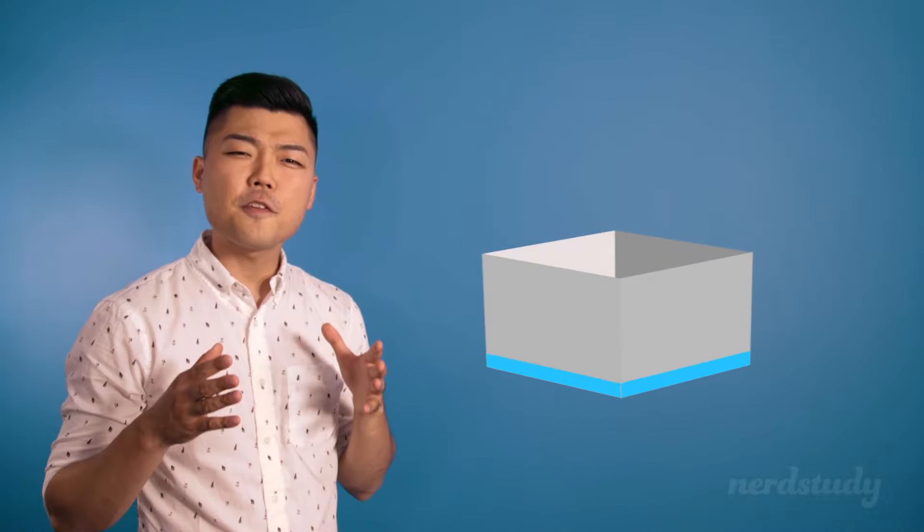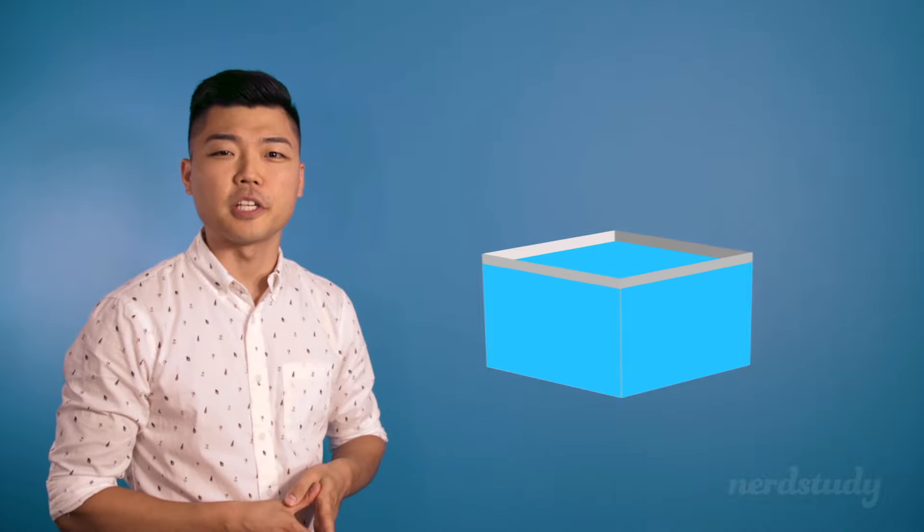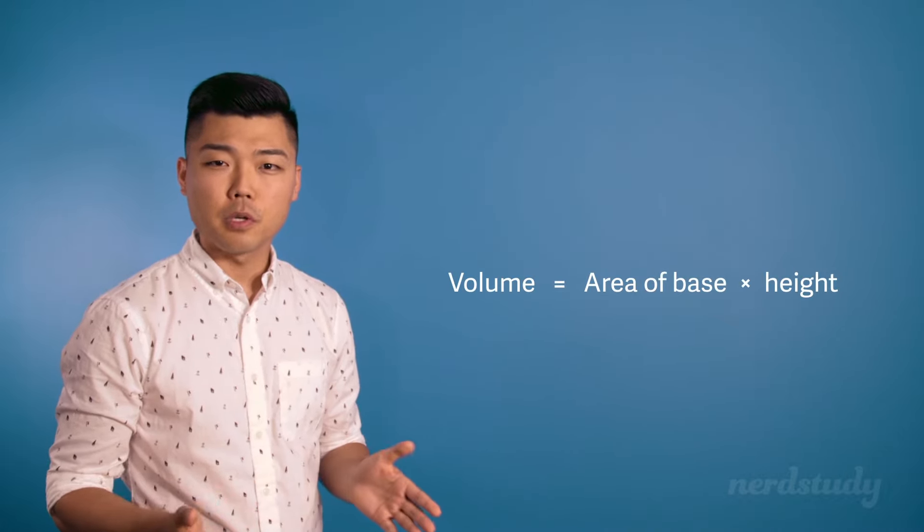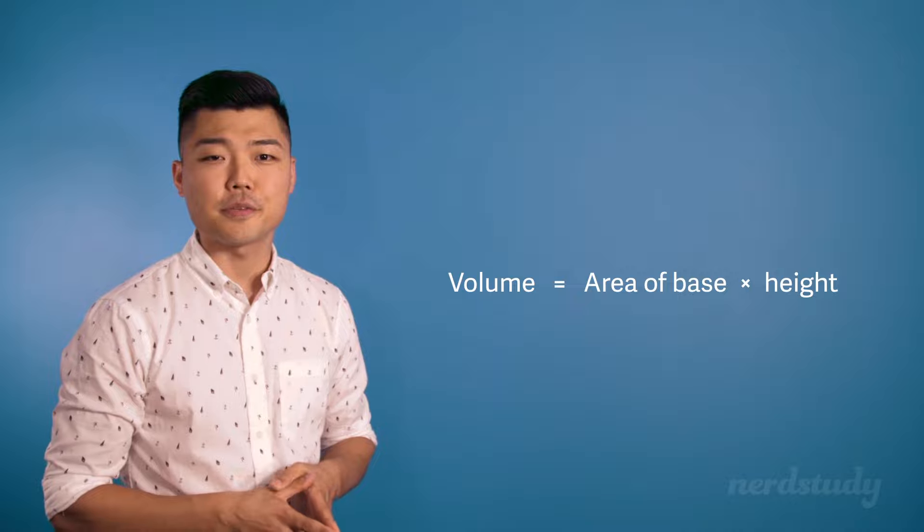Now let's take a look at how to find the volume of a prism. Remember that when we're looking for the volume, we're looking for the amount that can actually fit into the 3D object. The formula for getting the volume of a prism is the following: area of the base multiplied by height of the prism.